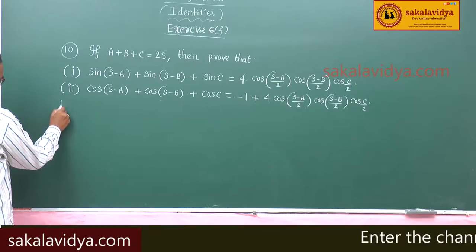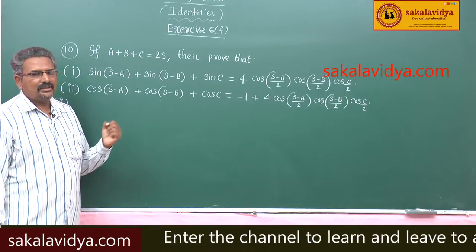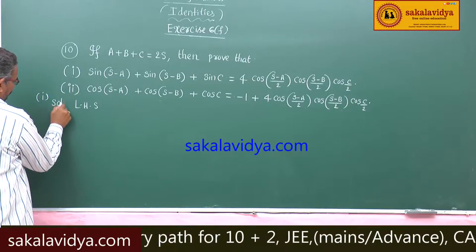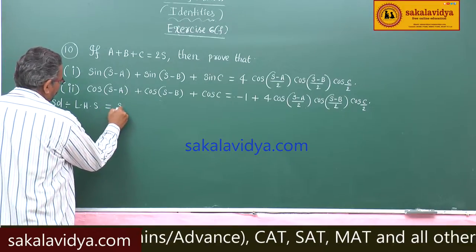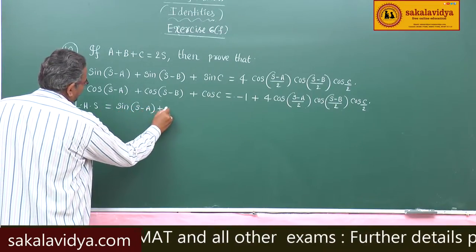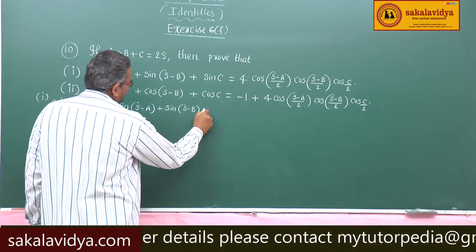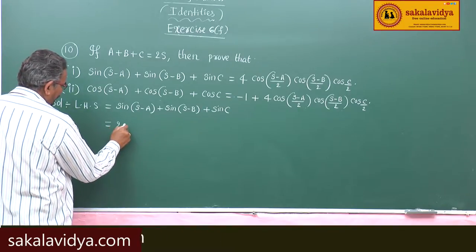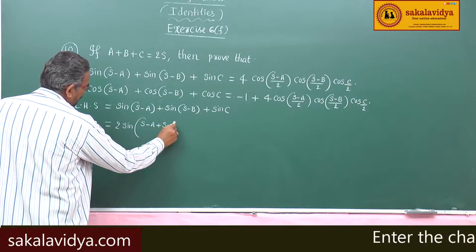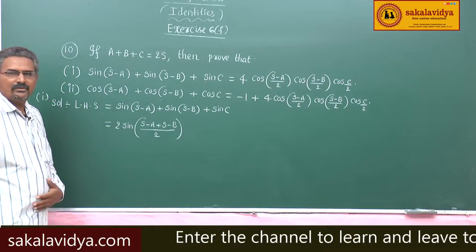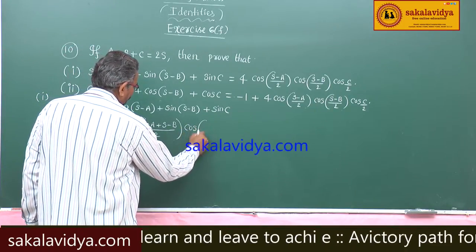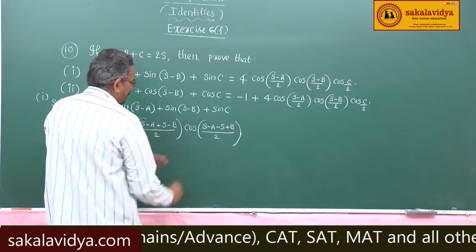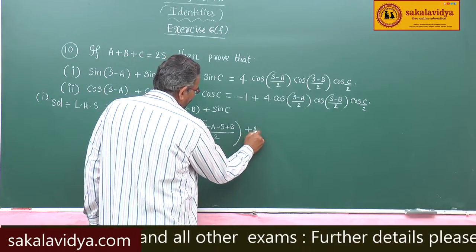Let us do the first problem. Consider the left hand side: sin(s minus a) plus sin(s minus b) plus sin(c). Applying sum-to-product: 2 sin((s minus a plus s minus b)/2) cos((s minus a minus s minus b)/2), plus sin(c) written as 2 sin(c/2) cos(c/2). This is a very important step.